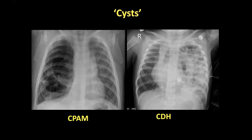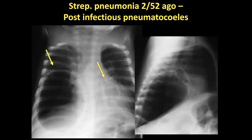Both of these are neonates. On the left there's mediastinal shift and a stomach bubble that looks more like colon — and we couldn't see a colon in the abdomen, confirming a diaphragmatic hernia. Post-infectious pneumatoceles can be very large. We've had vigorous debate about whether they should be managed or left, because they look terrifying. But our cardiothoracic surgeons are quite reticent to get involved unless there's significant mediastinal shift, because generally if the patient is well they do resolve on their own.